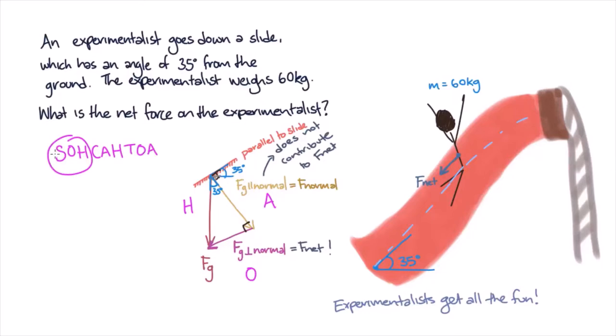So we have that sine of 35 degrees is equal to our net force divided by our gravitational force. We know that the gravitational force Fg is equal to mass times acceleration due to gravity.